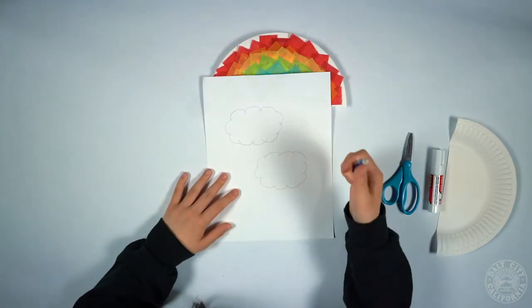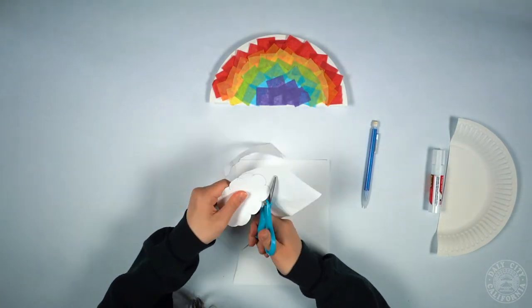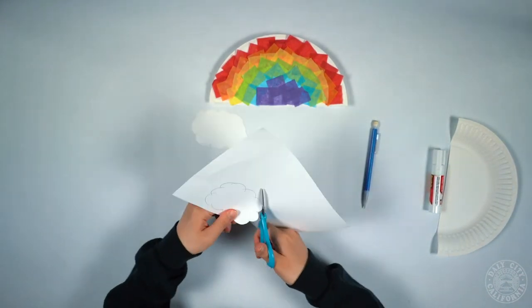After you finish that, you're going to cut out some clouds from your white cardstock and paste them on the paper plate as well.